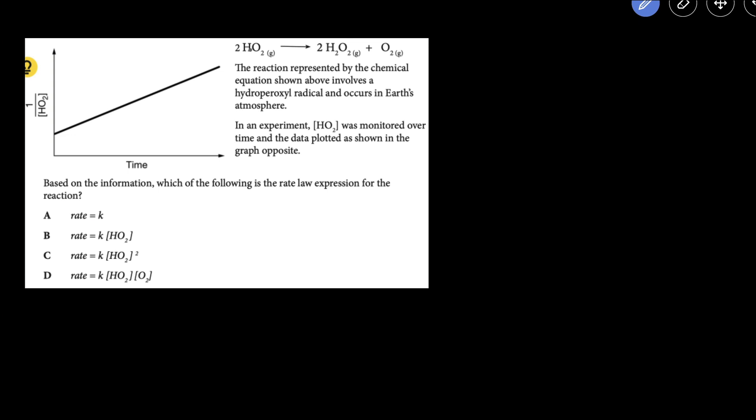Here we have a balanced chemical reaction. Our goal is to figure out the order with respect to the reactant HO2, and we're also given a straight line plot of one over the concentration of HO2 versus time.